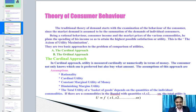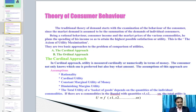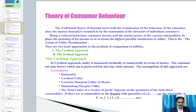The assumptions of the cardinal approach are: rationality, cardinal utility, and constant marginal utility of money. Rationality means the consumer aims to maximize his utility subject to the constraint imposed by his given income. Cardinal utility means the utility of each commodity is measurable — utility is a cardinal concept — and the most convenient measure is in money units the consumer is prepared to pay for another unit of the commodity.